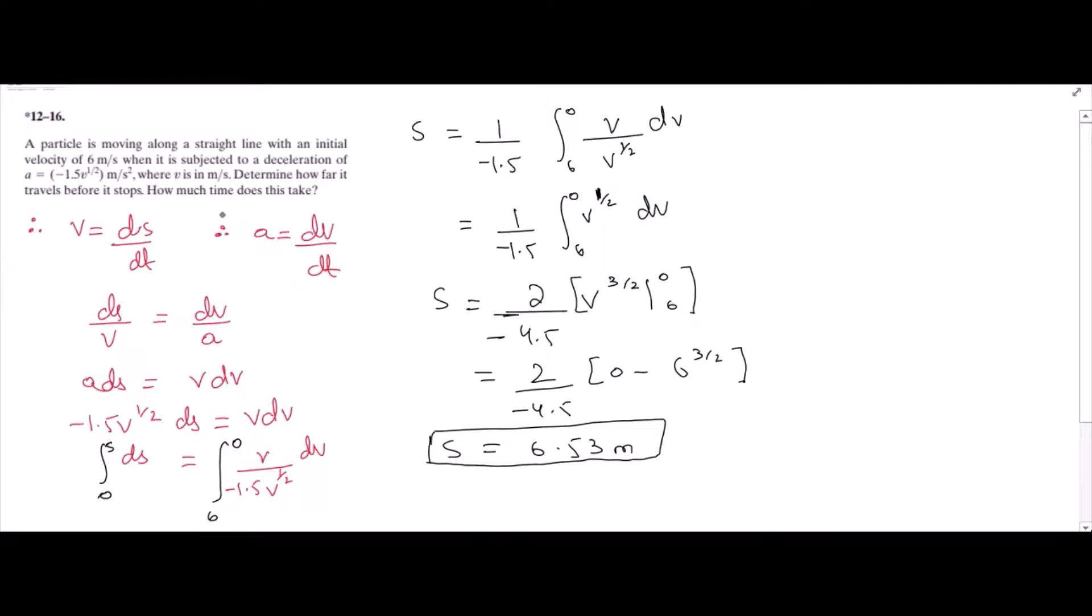So we have found the position. Now for the time taken, we have acceleration is equal to dv over dt, so dt is equal to dv over a. Now we can use the integration on both sides to get our answer. So we have integral of dt, the initial time is 0, final is t, and we have the function a is equal to negative 1.5 v to the 1 over 2 power dv.